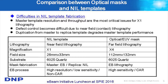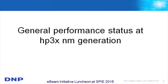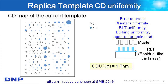Some degradation will happen from the master to the replica when we replicate the image. Reviewing general performance status — mostly data collected from the half-pitch 3x nanometer generation — the replica template CD uniformity across the 26 by 33 mm field is already 1.5 nanometers. Because of the smaller field size compared with 4x, it is relatively easier to achieve good CD uniformity.